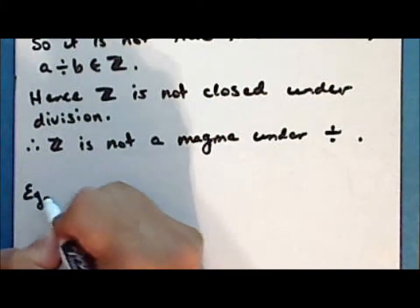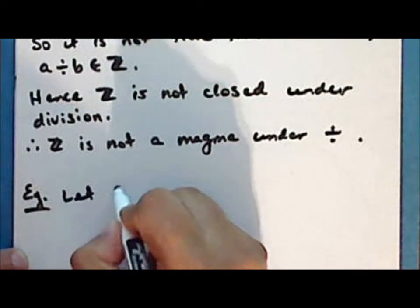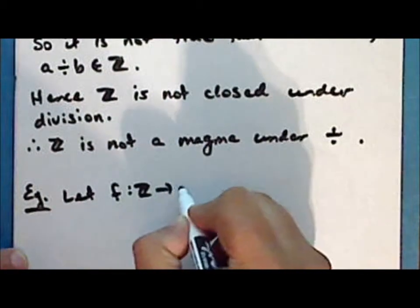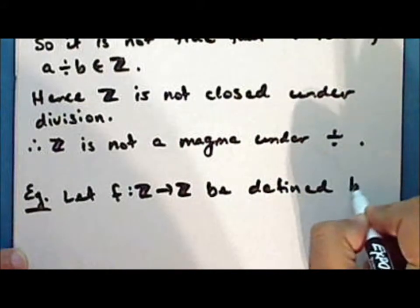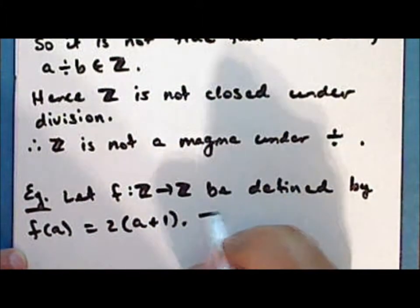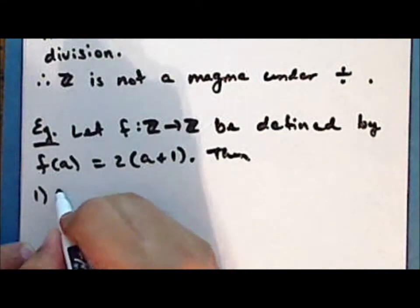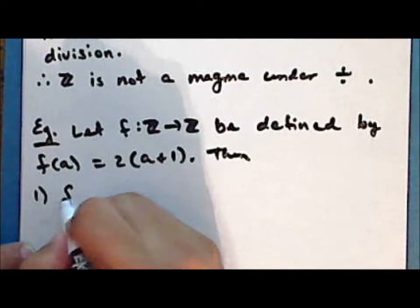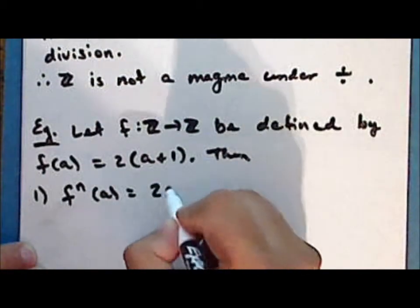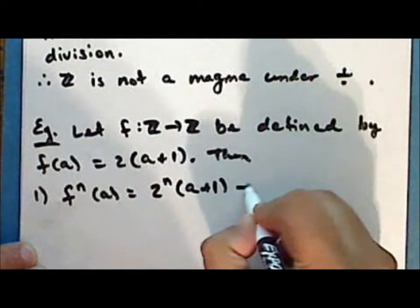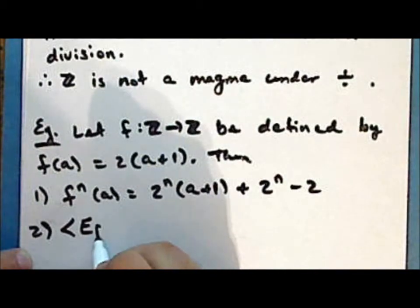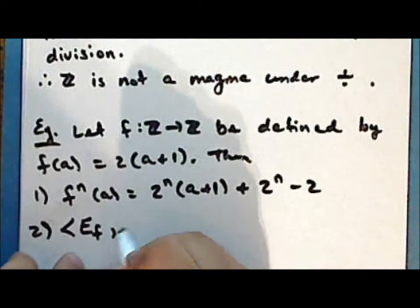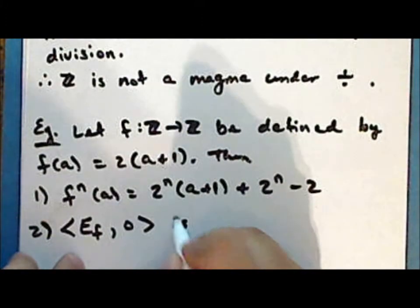The second exercise: let the function f be a map from the set of integers back into the set of integers, defined by f(a) = 2 times the quantity (a + 1). Then the formula for the nth iteration is 2 to the power of n times the quantity (a + 1) plus 2 to the power of n minus 2. The structure consisting of the set E_f together with the operation of function composition is a semigroup.